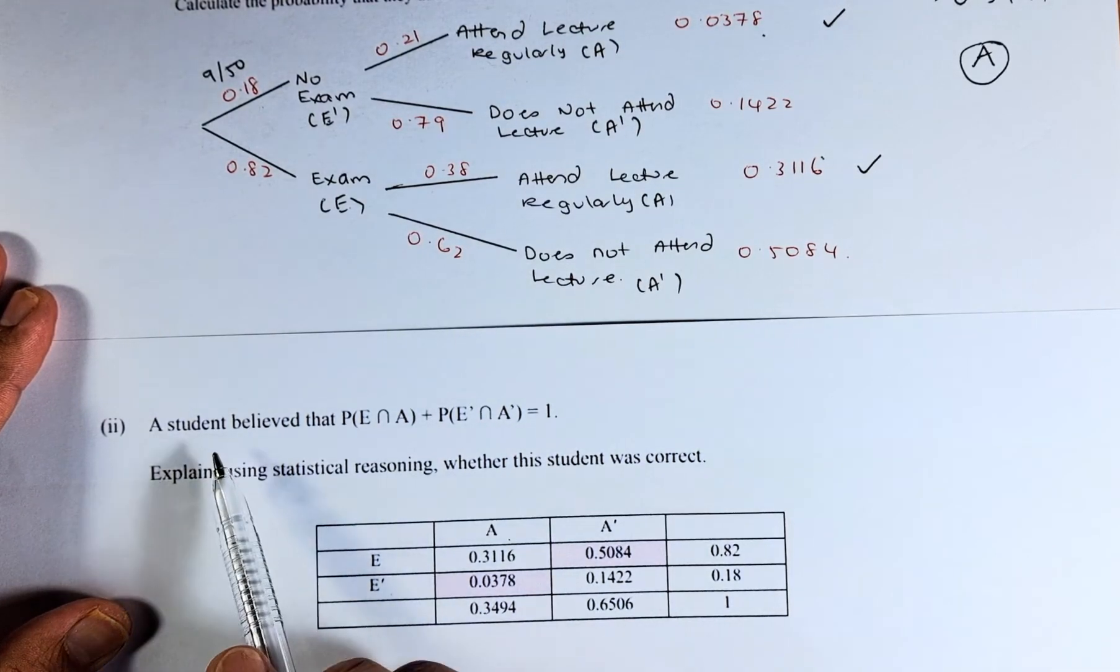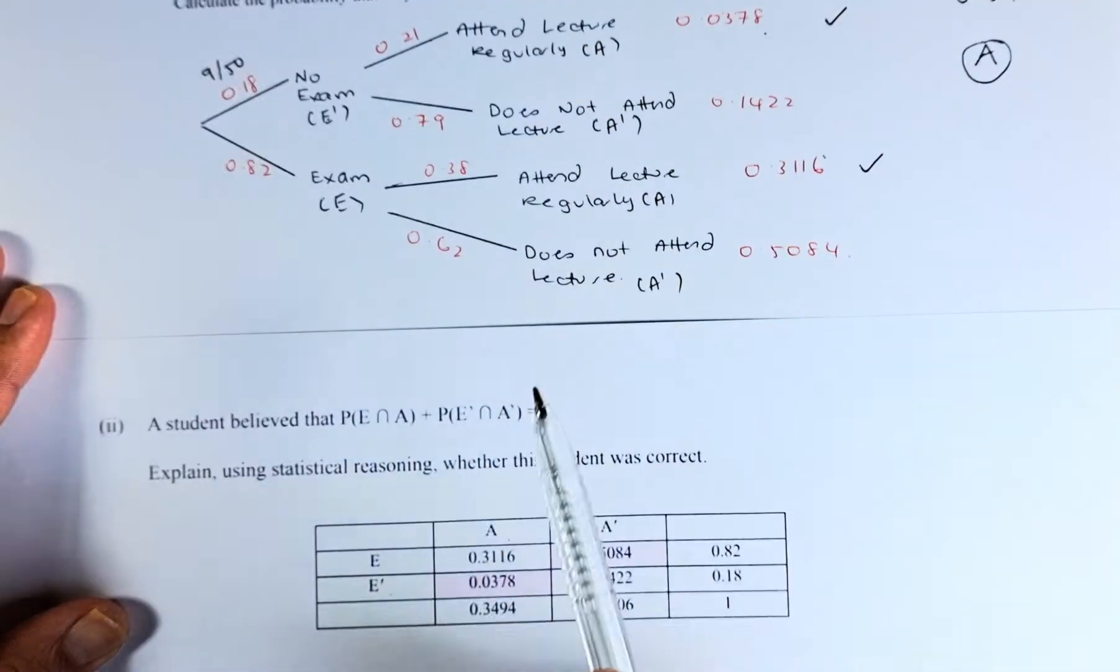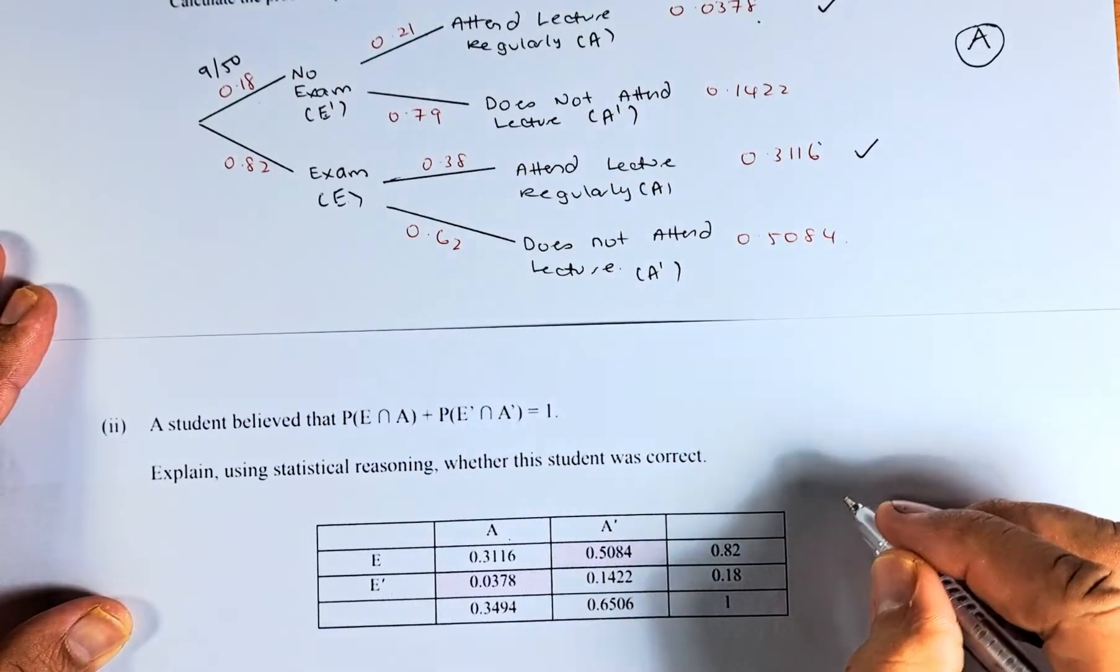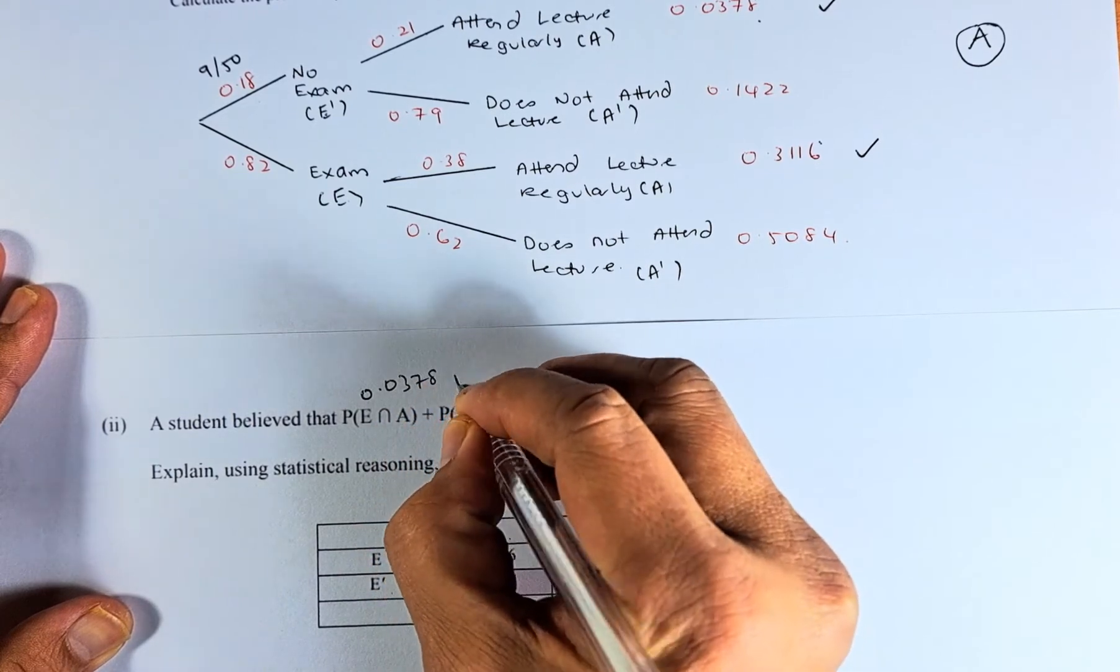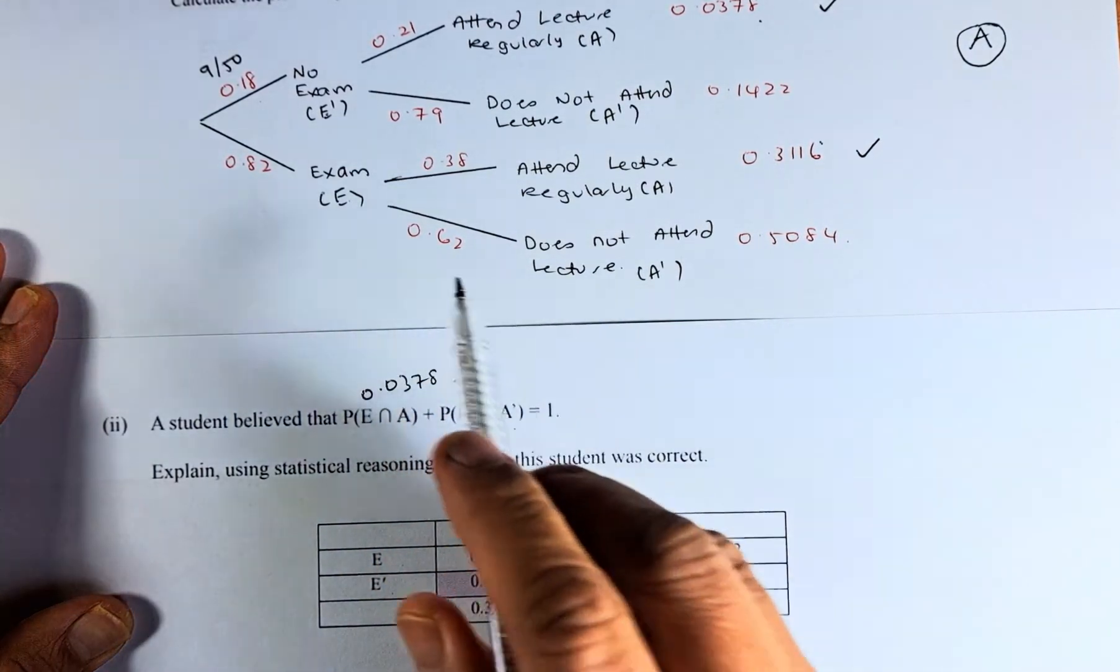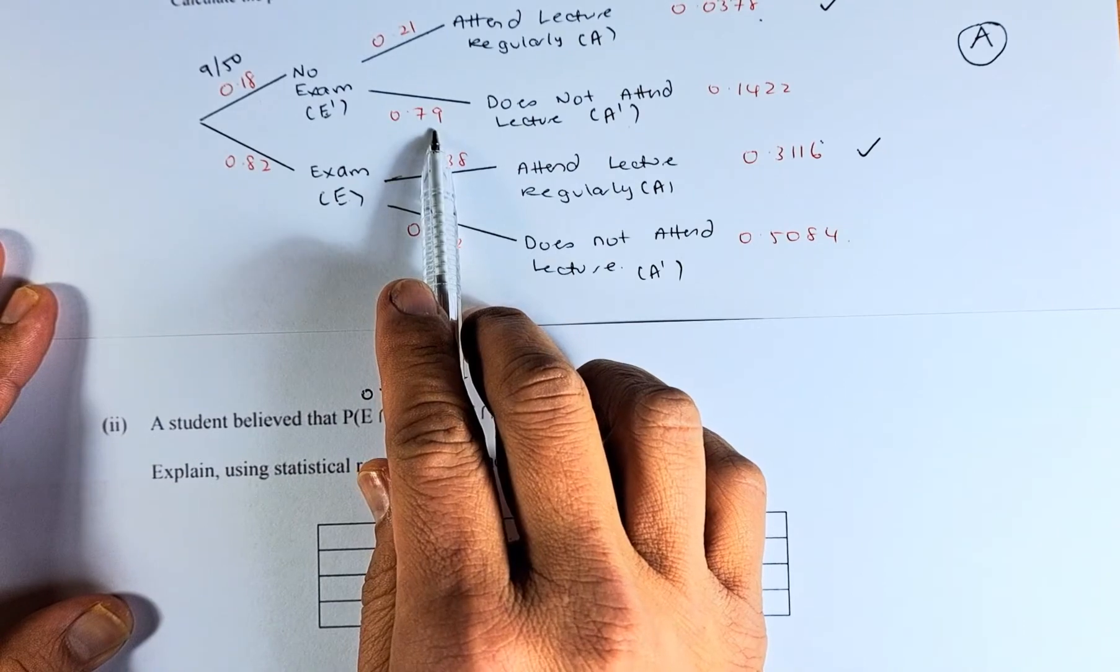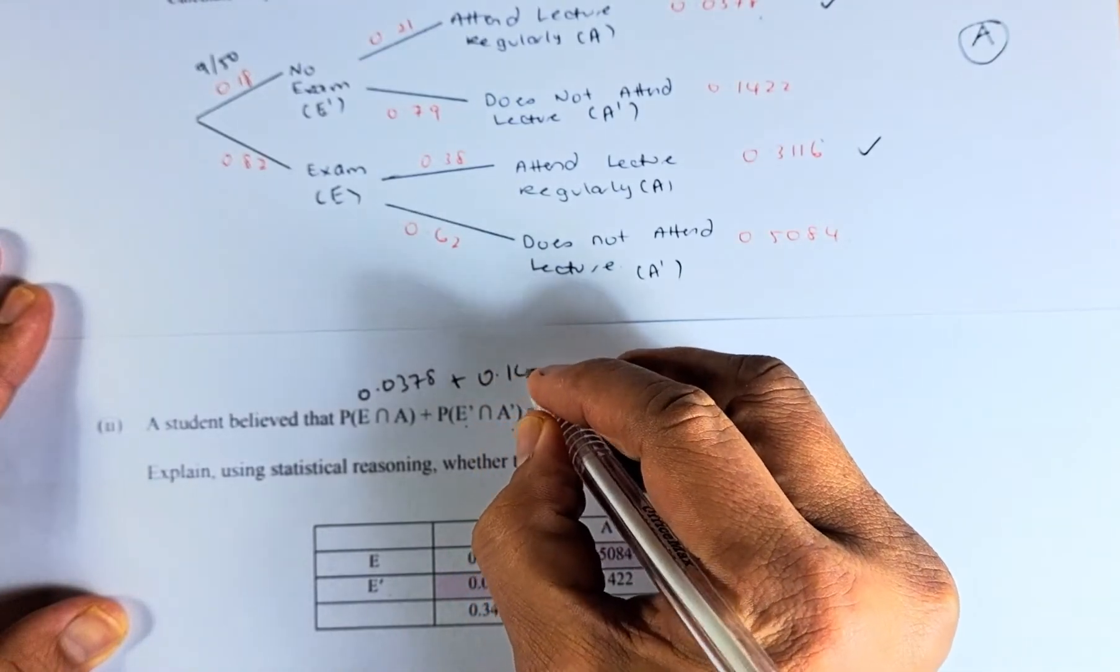The question is, do you believe that P(E ∩ A), exam and attend regularly, times P(E' ∩ A'), no exam and does not attend regularly, equals 1? So, you're going to take 0.18 times 0.79 which will give you 0.1422.